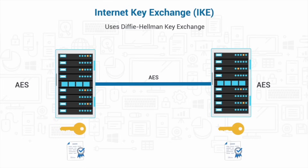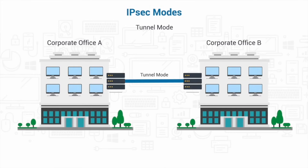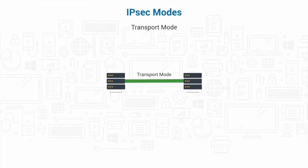There are two modes available to use with IPsec circuits, including VPNs. The first is called Tunnel Mode. It's commonly used to provide secure communication between two network gateways. For example, it will allow any user at Corporate Office A to communicate safely with any user at Corporate Office B because both offices have secured gateways acting as IPsec proxies. The second is called Transport Mode. It's used when two hosts connect directly with each other and the circuit is broken off after the session ends.